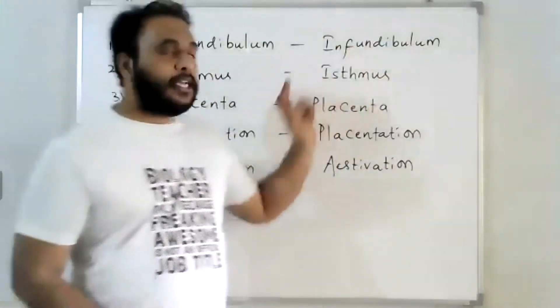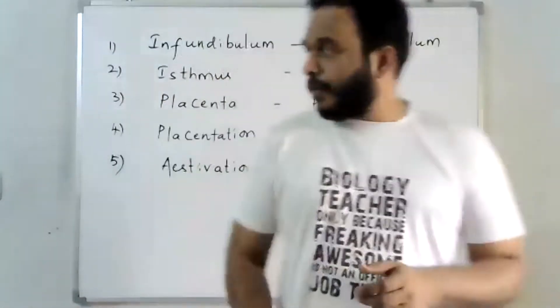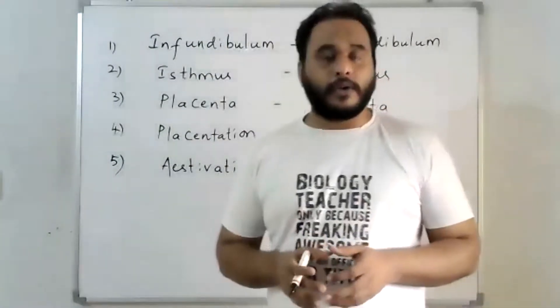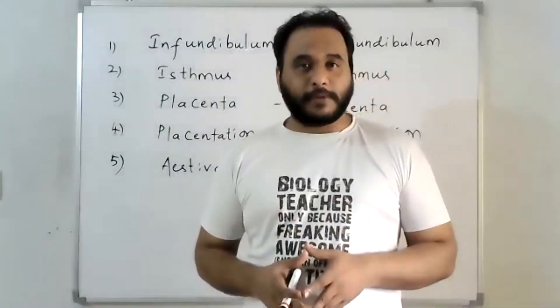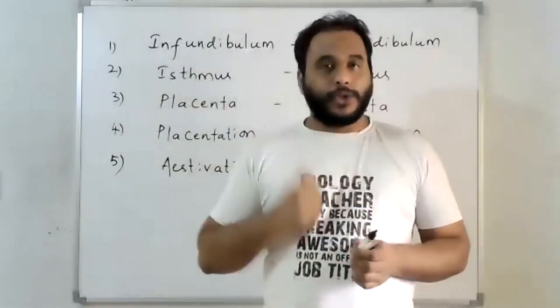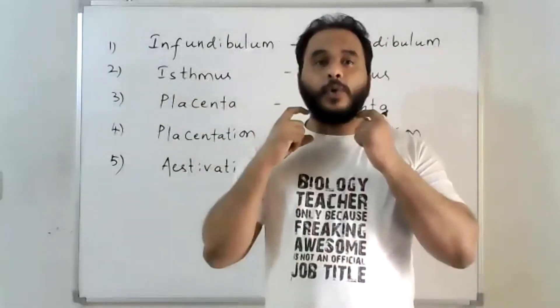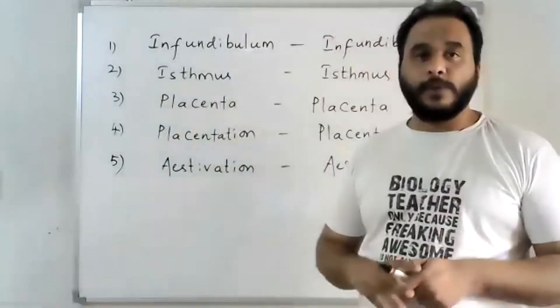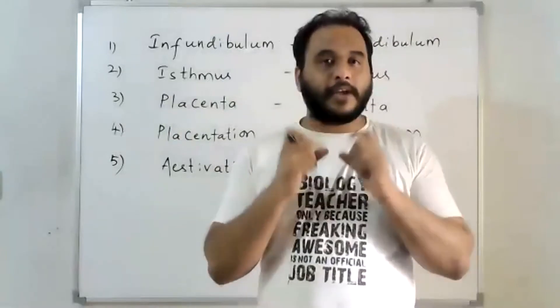Next, isthmus. Here also, two different meanings. Coming to isthmus, when it comes to neural control, chemical control and coordination chapter, isthmus is connective tissue that connects two lobes of the thyroid gland.